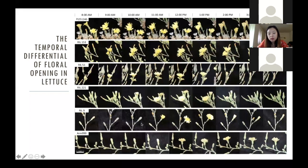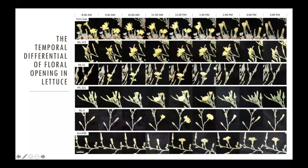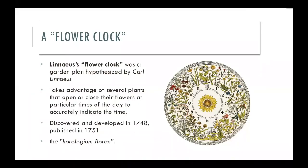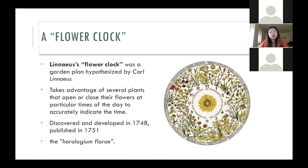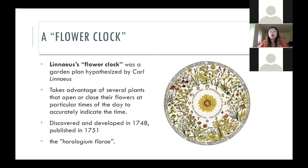When we cross the two parents, their progenies show a gradient of different floral opening times. Some lines peak around 11, others around noon, and some extend into the afternoon. This reminds me of a concept called a 'flower clock,' initially proposed by Carl Linnaeus — the idea that if you plant different species that open or close their flowers at different times of the day, you can tell the time just by looking at your garden. This idea was published in 1751 and has existed for a long time.